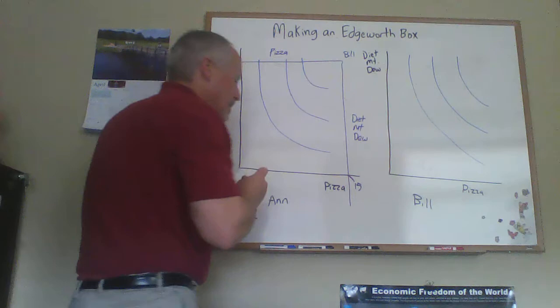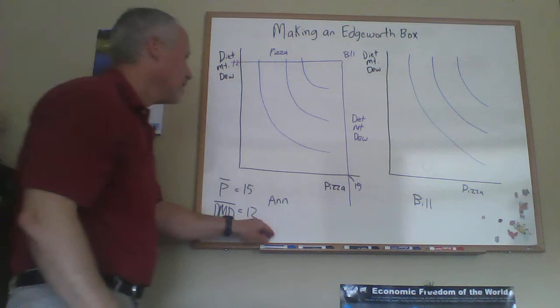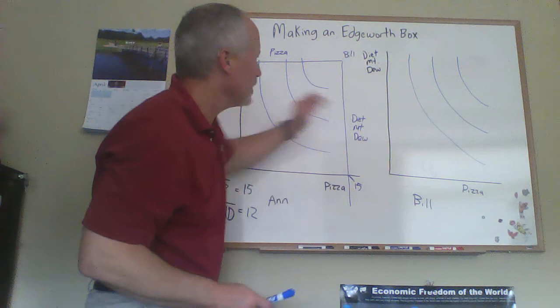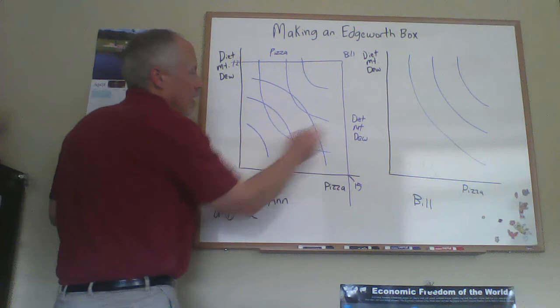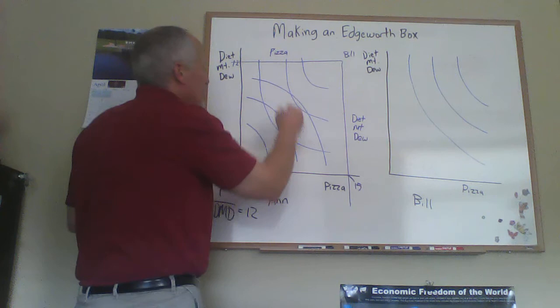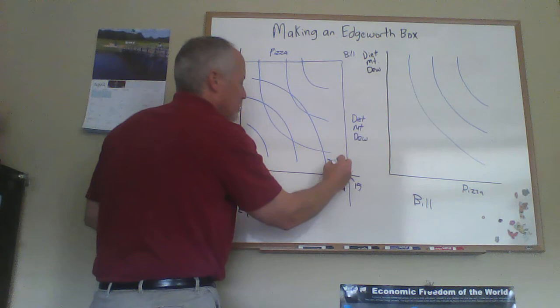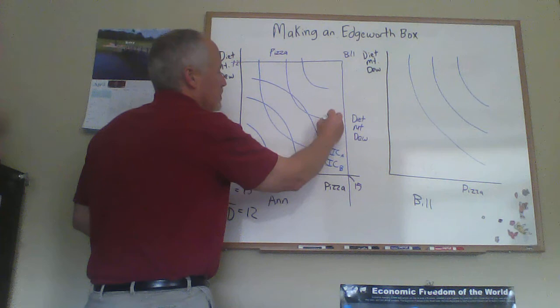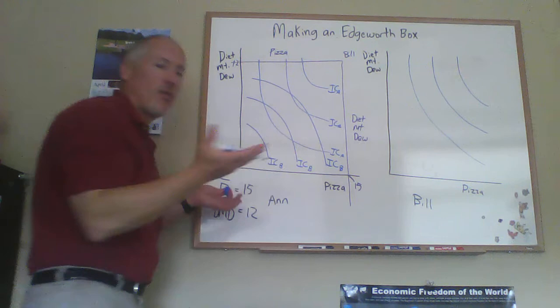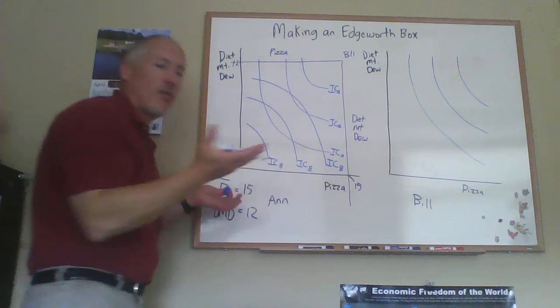When we have this, Bill's indifference curves will have come around and now be set on top here as well. He still has normal-shaped indifference curves, but from his standpoint — because we've put them upside down — Bill's indifference curves would look something like this, curving into the box from the upper-right corner. And then the ones we're used to seeing would be for Ann, curving in from the lower-left. And there we have it — we've got the box. This is how we go about constructing the Edgeworth box. I'll have another video where we actually use this to think about Pareto optimality.